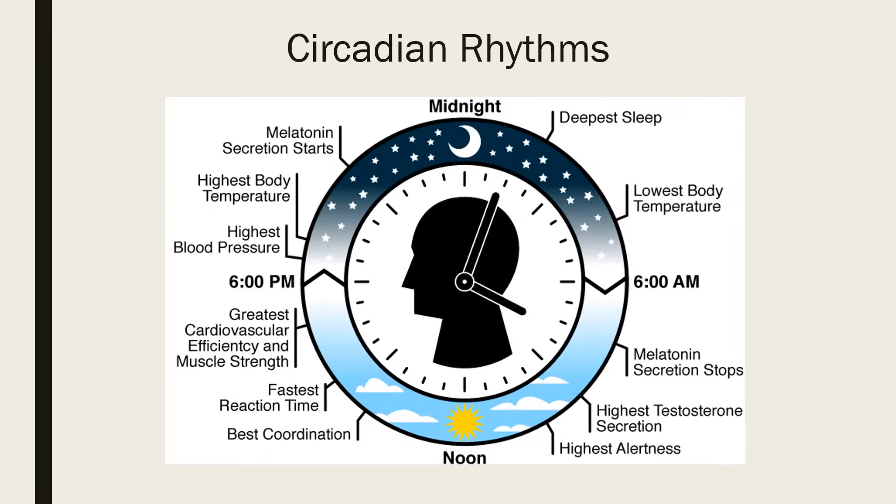As you can see in this diagram, circadian rhythms are associated with clear patterns of brainwave activity, hormone production, cell regeneration and other biological activities including blood pressure and body temperature. Circadian rhythms are important in determining the sleeping and feeding patterns of all animals including human beings.